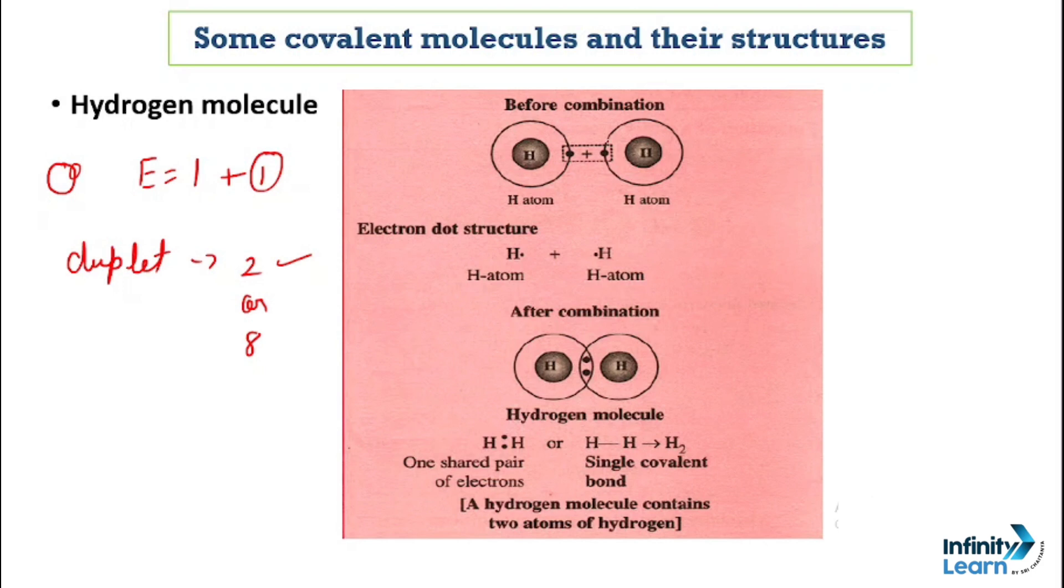So what happens is, you can see here that one atom of hydrogen shares with another hydrogen atom. In the electron dot structure, you can see this here, and after combination, you can see here that hydrogen shares one pair of electrons, and our single covalent bond is formed here. The hydrogen molecule contains 2 atoms of hydrogen.